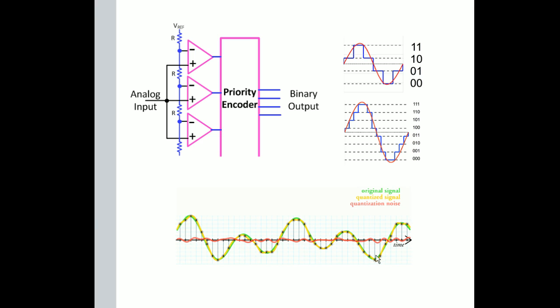Flash converter. Now I used to use these in video all the time, loved them, right? The problem is, eight bits, there's 256 comparators. Nine bits, there's 512 comparators. Ten bits, it's up to a thousand.